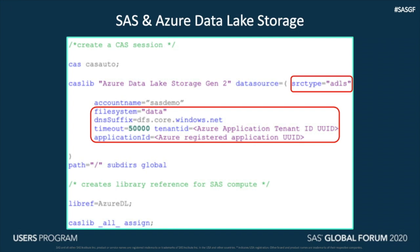First and foremost, when an ADLS storage instance is created in Azure, it has to be ADLS Gen 2 for SAS to connect and access data. Other important parameters are the source type, which is set to ADLS — it is the SAS system-defined type, so it has to be ADLS for this to work. A few Azure-specific connection parameters: file system.